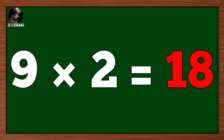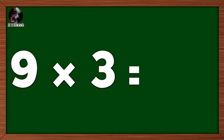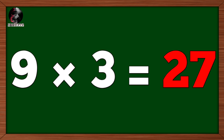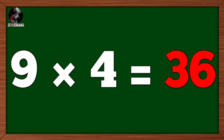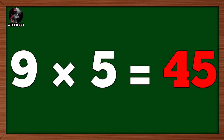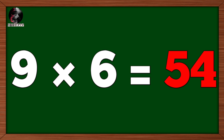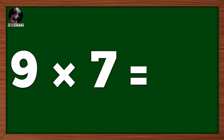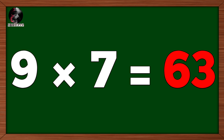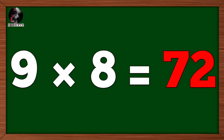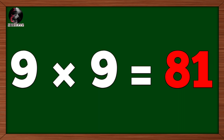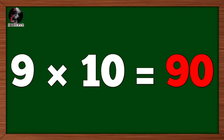Nine two's are eighteen. Nine three's are twenty-seven. Nine four's are thirty-six. Nine five's are forty-five. Nine six's are fifty-four. Nine seven's are sixty-three. Nine eight's are seventy-two. Nine nine's are eighty-one. Nine ten's are ninety.